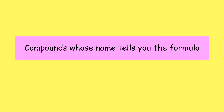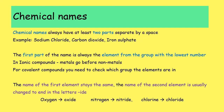Now we're going to look at compounds where the name immediately tells you the formula. Chemical names always have at least two parts separated by a space — for example, sodium chloride, carbon dioxide, iron sulfate. The first part of the name is always the element from the group with the lowest number. For ionic compounds, metals in groups one, two, or three go before non-metals in groups four, five, six, or seven. For covalent compounds, look at the positions: nitrogen is in group five and oxygen is in group six, so nitrogen comes before oxygen — it's nitrogen oxide rather than oxygen nitride. For hydrogen reacting with chlorine, hydrogen is often written in group one, so hydrogen comes before chlorine: hydrogen chloride.